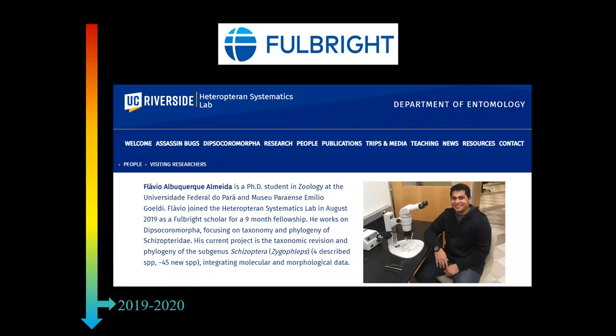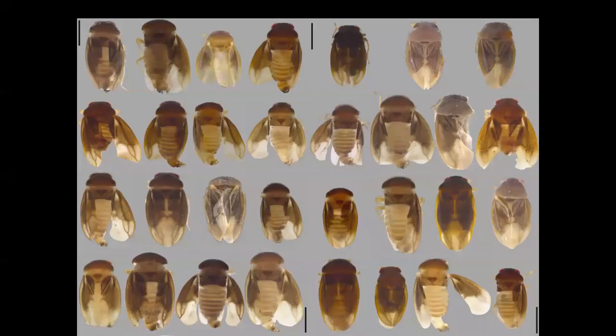In 2019, I got a Fulbright scholarship for a nine-month fellowship to go to UC Riverside to work with Christiana and all of her collaborators. There, I started working on Zygoflaps, focusing on the taxonomy and phylogeny. As soon as I got there, I started looking at the material she had, plus some specimens I had collected before. This is the very first picture of Zygoflaps males. My first thought was — okay, they are very brown and similar. I knew it would be very challenging.